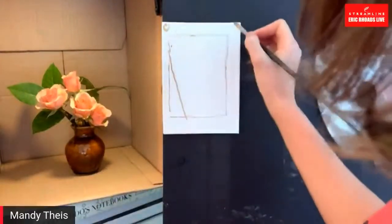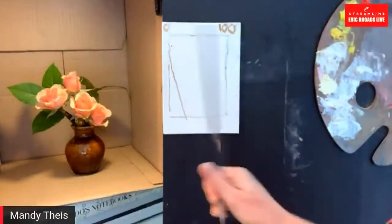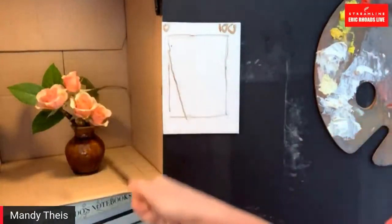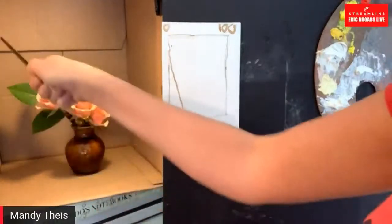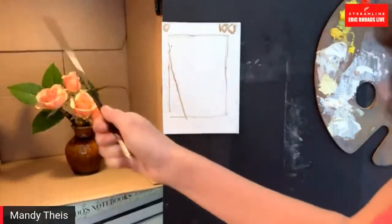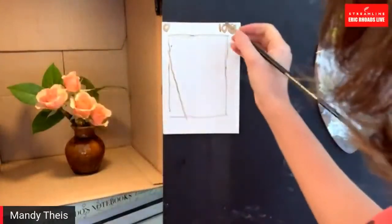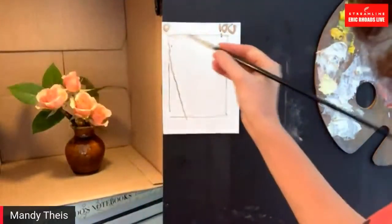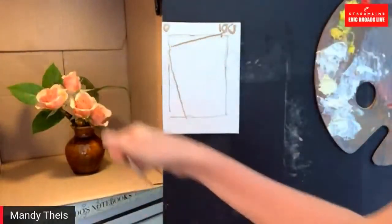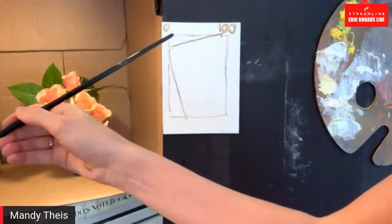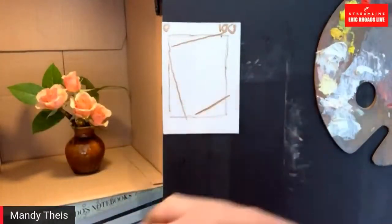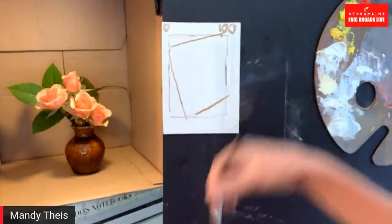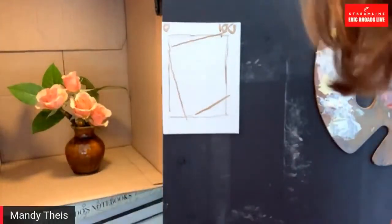Another way to do this I call the zero-to-a-hundred method. If I put zero here and a hundred on this corner and I'm trying to figure out where the top leaf point goes, I know my vertical line is zero and the edge of my rose is a hundred. I can see that the tip of that leaf is really far over — it's like at 90. That's another way to think about visual information and help translate that big shape onto your canvas. By combining these methods, I can follow the angle of the bottom leaf and confirm the edge representing the very edge of my biggest rose.